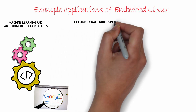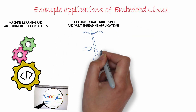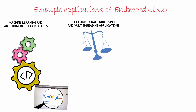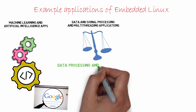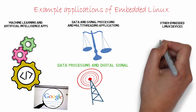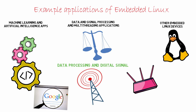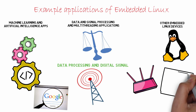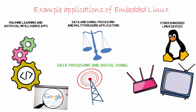Data and signal processing and multi-threading applications: the Linux kernel is highly scalable and can run efficiently on multi-core systems, making good use of several processor cores. This helps in applications that need several threads running in parallel. Data processing and digital signal processing are two areas where this ability of Embedded Linux devices can be put to good use. Other Embedded Linux devices include network devices like routers, switches, network-attached storage devices, and home entertainment systems like smart TVs — all of which have a specific purpose and need only a subset of functionalities compared to a general purpose computer.